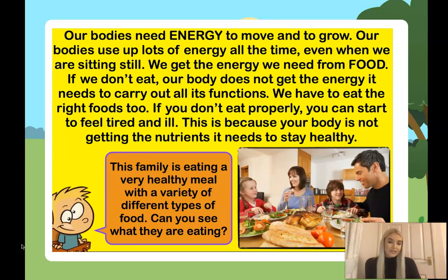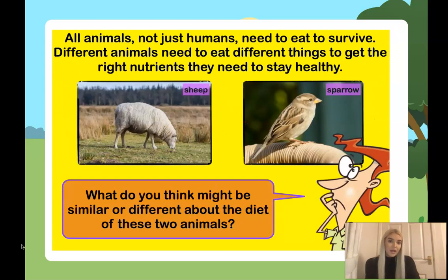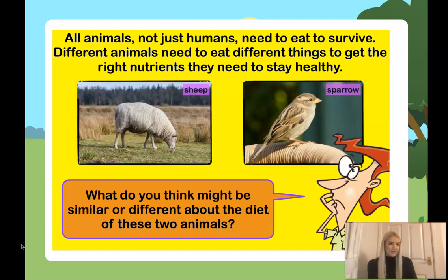Okay, fantastic. You might have spotted the salad on the table, the chicken in the middle — lots of things — and you might have even categorized them into their food groups. Now, as well as humans needing food for energy, animals do too. Different animals don't all eat the same things; they eat different things because those nutrients are good for them and help them stay healthy.